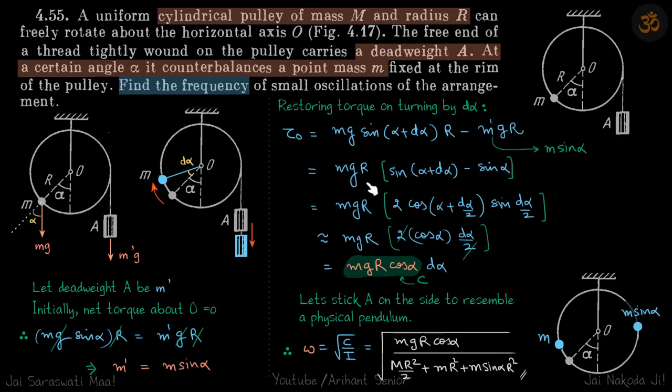Simplifying, this becomes mg r times (sin(alpha plus d alpha) minus sin alpha). Now sin a minus sin b equals cos((a plus b)/2) times sin((a minus b)/2). We apply that identity and get this.